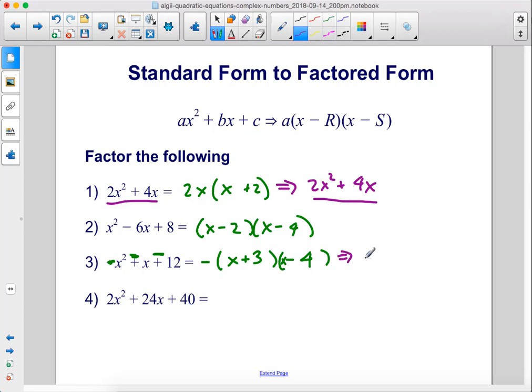Let's check to make sure that we're right. So I'm going to leave that negative sign out front. Multiply this together. We get x squared minus 4x plus 3x minus 12. And when we just bring in the negative sign, we get negative x squared plus x plus 12. And that is what we started with. So we did it correctly.